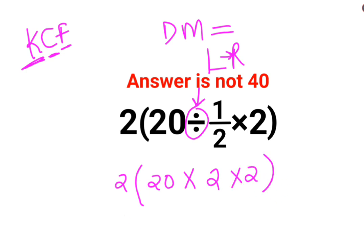So here what happens is we have 2 and 20 multiplied by 2 multiplied by 2 gets you 80. So 2 multiplied by 80, answer for this question is supposed to be 160.